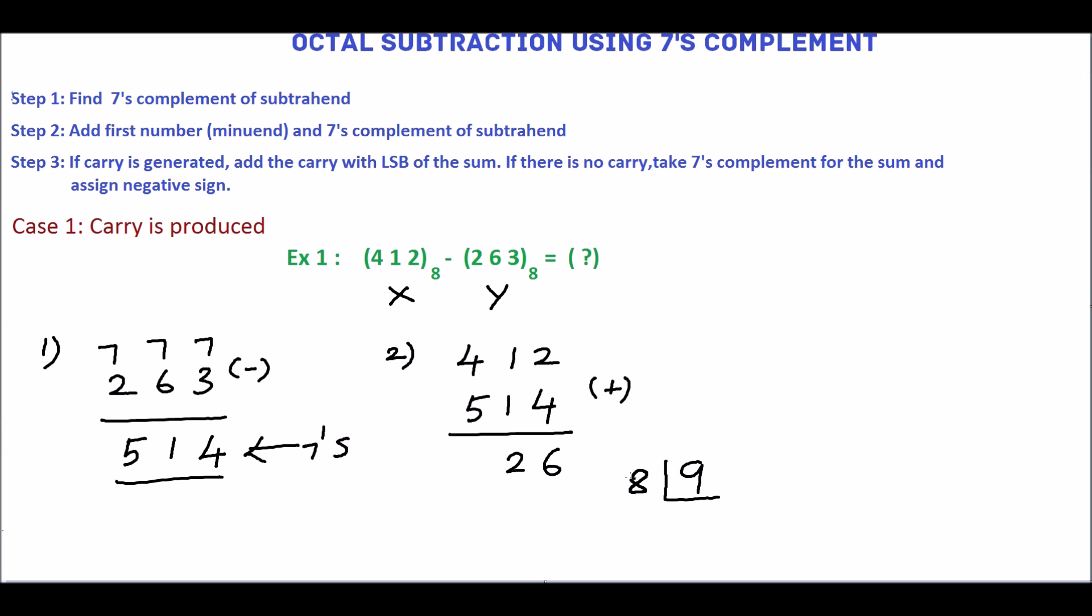We will convert this 9 into equivalent octal number. The quotient is 1 and the remainder is 1, so the equivalent octal number is 11. This 1 is called the end-around carry.